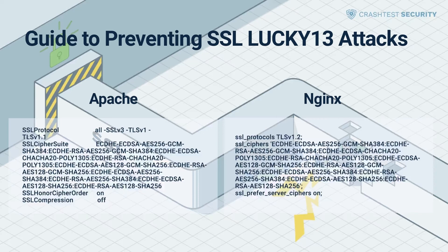For Nginx, update the configuration file, which is usually located at /etc/nginx/nginx.conf, /etc/nginx/sites-enabled/yoursite.com on Ubuntu/Debian, or /etc/nginx/conf.d/nginx.conf on RHEL/CentOS. Add the following directive to the server section, then restart the Nginx server.